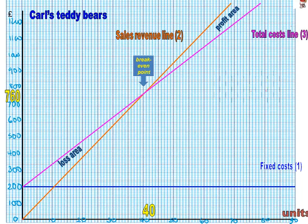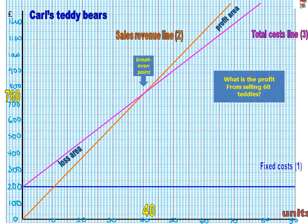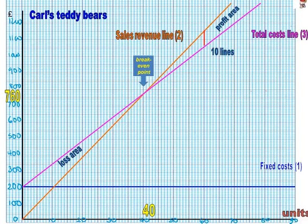For example, you can read off the chart: what's the profit from selling 60 teddy bears? You need to draw a line from 60 up into the profit area and count the number of little squares in there — there should be 10 lines within that section. Looking at our graph, the scale goes from 0 to 100 with 10 little lines, so every line is worth £10. That means 10 lines times £10 gives you a £100 profit if he sells 60 teddy bears.